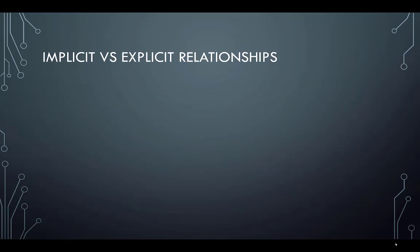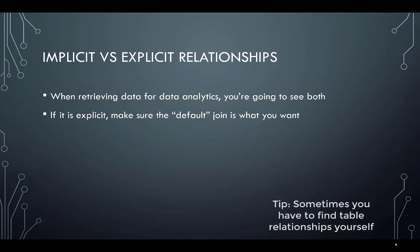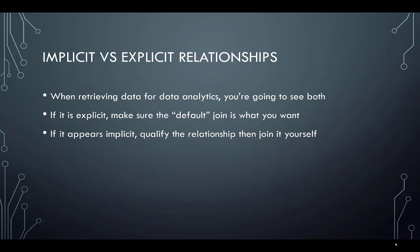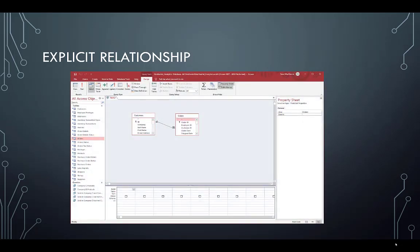Implicit versus explicit relationships — there are two different ways you can see relationships in a database. When you're retrieving data for data analytics, you'll see both. If it is explicit, make sure the default join is what you want. If it is implicit, you'll qualify the relationship and join it yourself. In an explicit relationship, the database design already has a defined relationship between the tables, so when we pull our customers and orders table from our Northwind database onto a query, it automatically creates the join — though we might want a different join for a specific query.